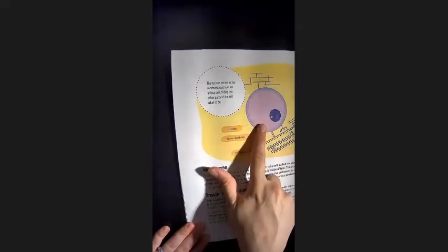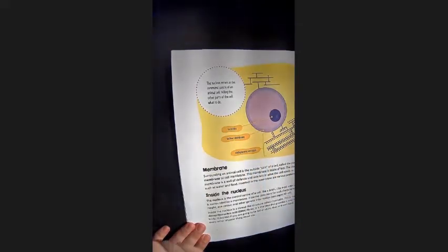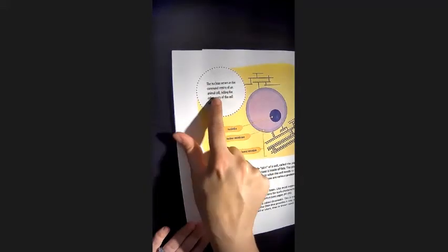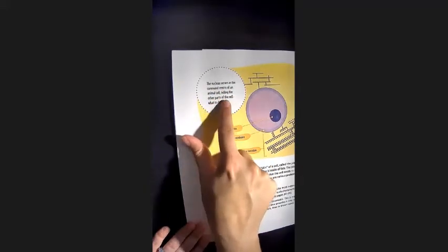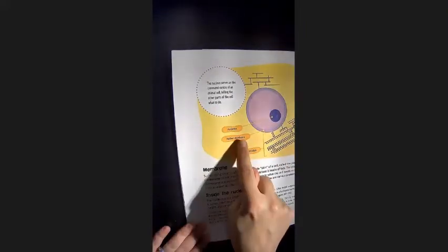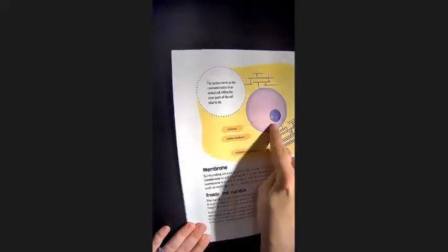Here is a diagram of our nucleus. The nucleus serves as the command center of an animal cell, telling the other parts of the cell what to do. And it breaks down the different parts of the nucleus.